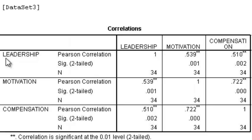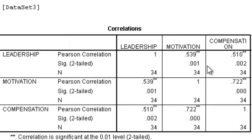If the correlation of each variable is negative, it means the correlation between the variables is reversed — when leadership increases, motivation decreases. So minus means a reverse correlation, and a positive correlation means a one-way same-direction correlation.